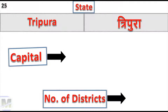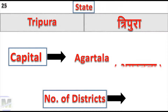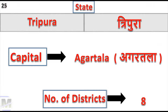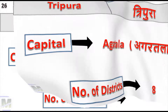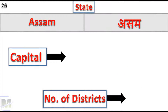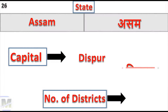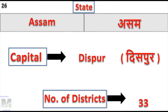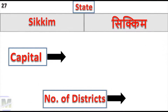Tripura: Capital Agartala, Number of Districts: 8. Assam: Capital Dispur, Number of Districts: 33.